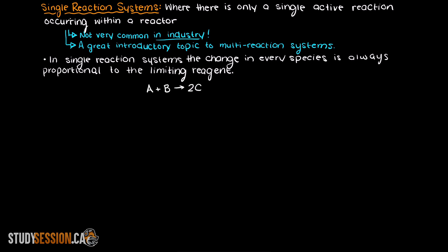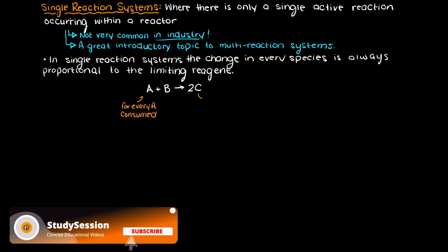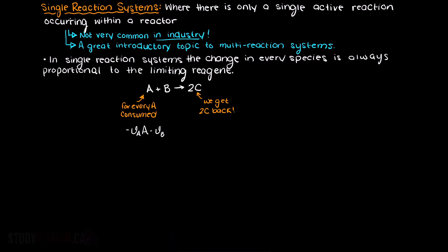A plus B produces 2C, then we know for every single A consumed we will receive 2C out. This is great as it allows us to create relationships between all species in our reaction and the limiting reagent.